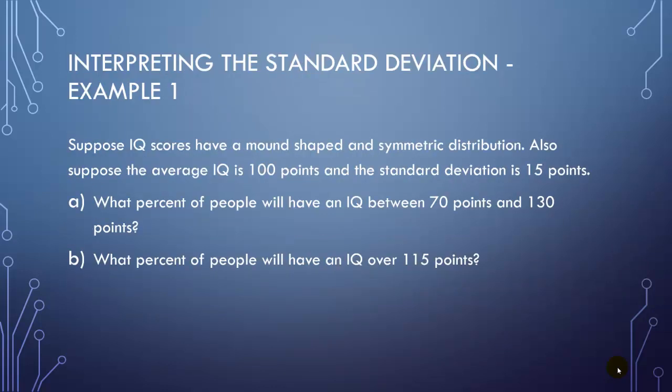So let's talk about interpreting the standard deviation. We have two different rules to work with. So when interpreting the standard deviation, we need to know which rule to use. So let's look at IQ scores to start off with. IQ scores are known to follow a mound-shaped and a symmetrical distribution. It's designed that way. That's the way the test is. And the average IQ is about 100, and the standard deviation is about 15 points.